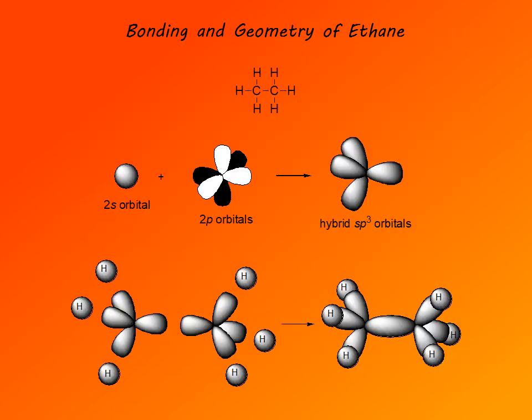Now we can look at the formation of ethane. Ethane is the next simplest — the second most simple — alkane; it is the next member of the homologous series of alkanes. A homologous series of compounds is a series where each more complex member differs from the previous one by a CH2 group.